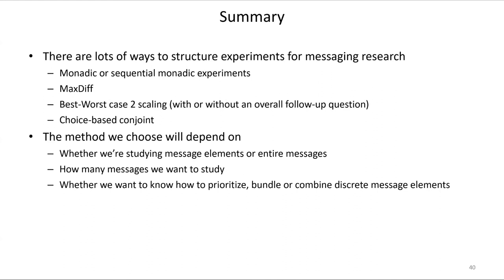Would you ever prefer monadic or sequential monadic over max diff? Yes — if I had a small number of items, it would be overkill to do max diff. With only four items, I might do a constant sum or rank ordering instead. I'd also go the monadic route if I wanted attitudinal depth — not just which one is best, but how people rate each in terms of credibility, appeal, relevance to 'someone like me,' and other attitude statements.